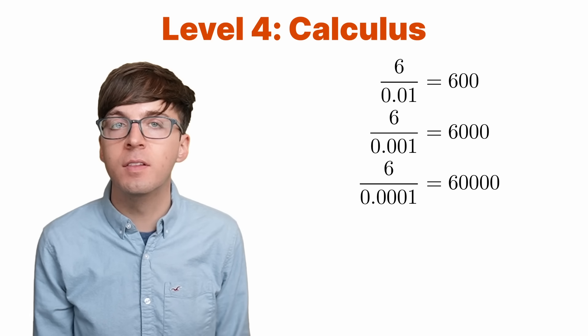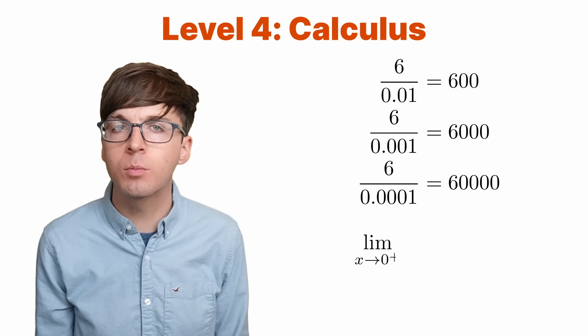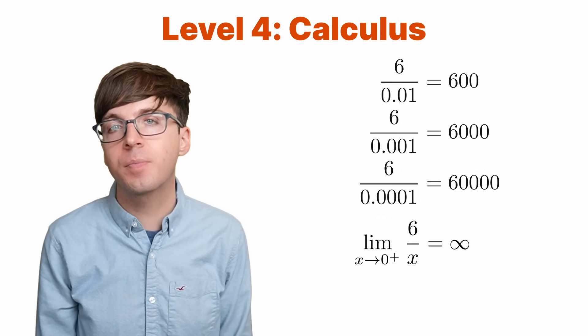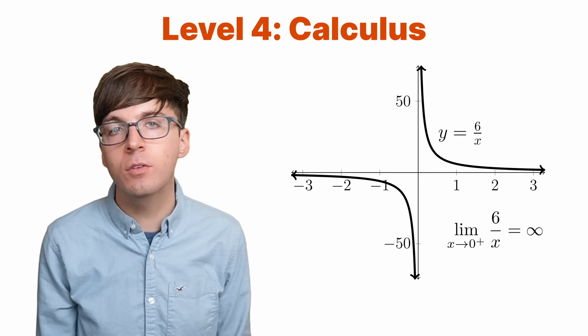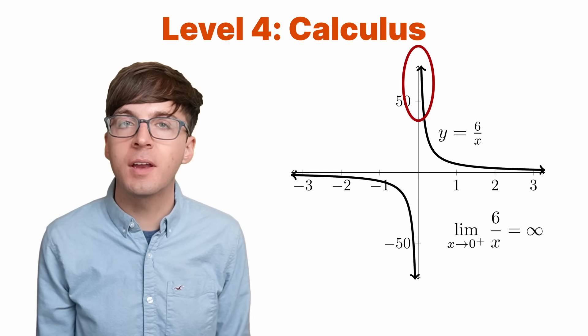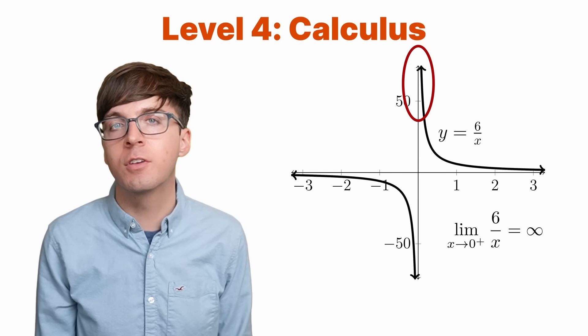In calculus, we call this a limit. The limit of six over x as x approaches zero from the positive side is equal to infinity. If we graph the function y equals six over x, we can see this limit. There's a vertical asymptote at zero, and on the right side of it, the function goes to infinity.